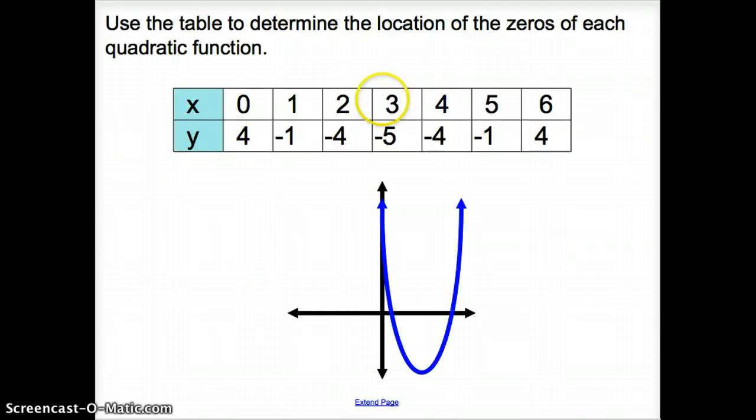What if we were asked to use a table to determine the location of the zeros or solutions of the quadratic function? Here's my table. Say this graph represents this table. Where would my zeros be? Right here, where the graph crosses the x-axis. We want to focus on our y's. Down here, my y's are negative. But as I move up and pass the x-axis, which is zero, it turns into positive. On the table, we look at where our y's are negative and turn to positive.